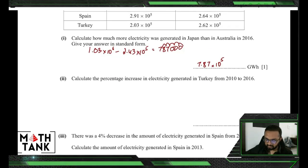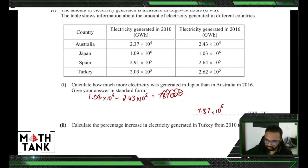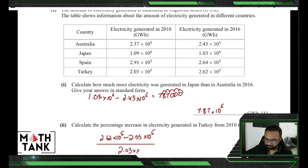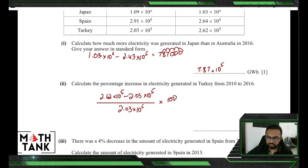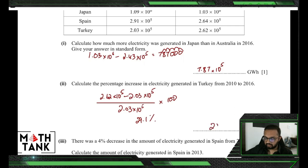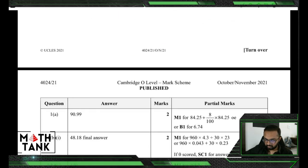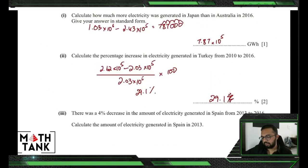Calculate the percentage increase in electricity generated in Turkey from 2010 to 2016. So that's 2.62 into 10 to the power 5 minus 2.03 into 10 to the power 5, divided by the original — final minus original divided by original. Everything can be done on the calculator. The answer is 29.1 percent, which is correct.